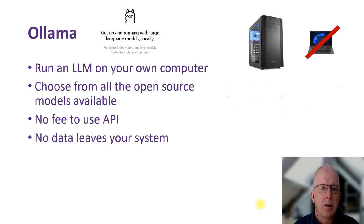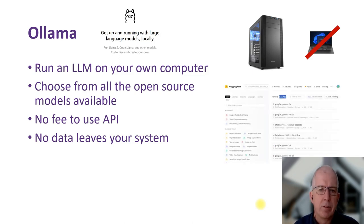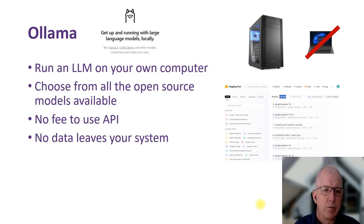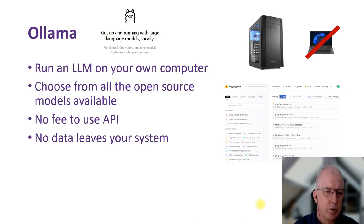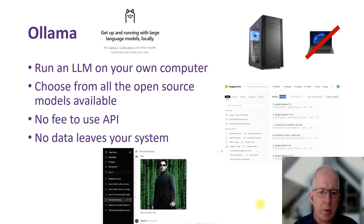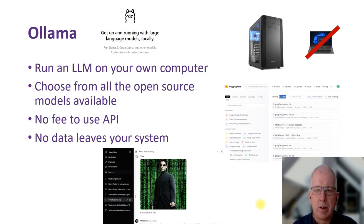So you install OLAMA and then you go to, for instance, Hugging Face - that's a big open source language model website. They have more than 500,000 different open source models. You can download any of the models there, use them in OLAMA, and you don't have to pay any fees to use the API. You can use the large language model with your own data or your own chat questions, and no data leaves your system. There are even people that build nice web interfaces for OLAMA so you can use it in your browser just like ChatGPT and upload images. The biggest difference is that you can just choose any of the open source models available.